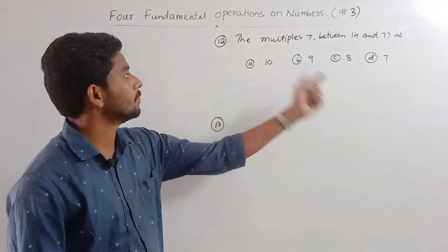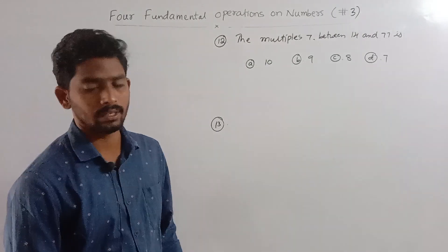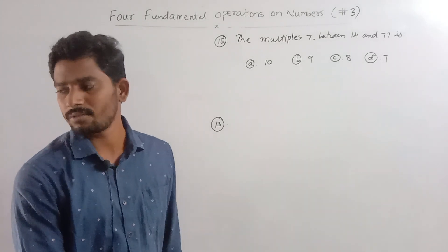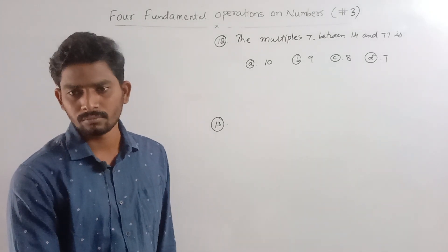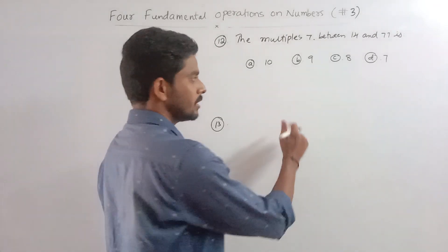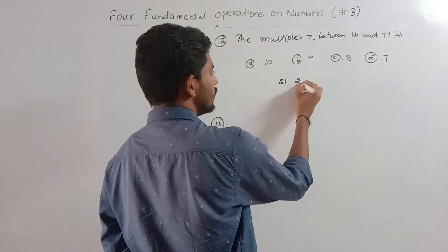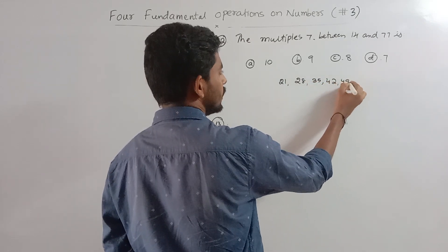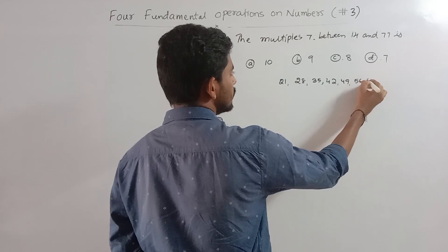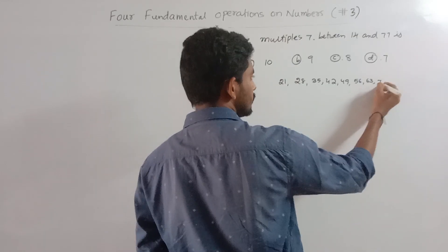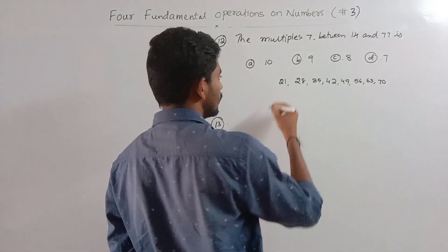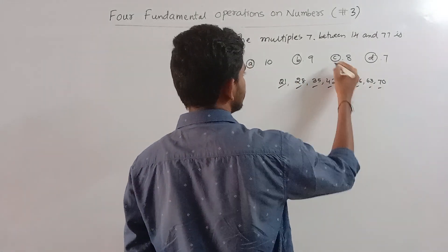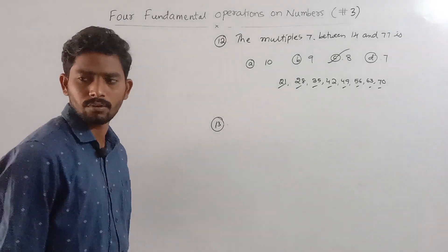Question 12: the multiples of 7 between 14 and 77. So the multiples are 21, 28, 35, 42, 49, 56, 63 — that is 1, 2, 3, 4, 5, 6, 7, 8. So there are 8 multiples of 7 between 14 and 77.